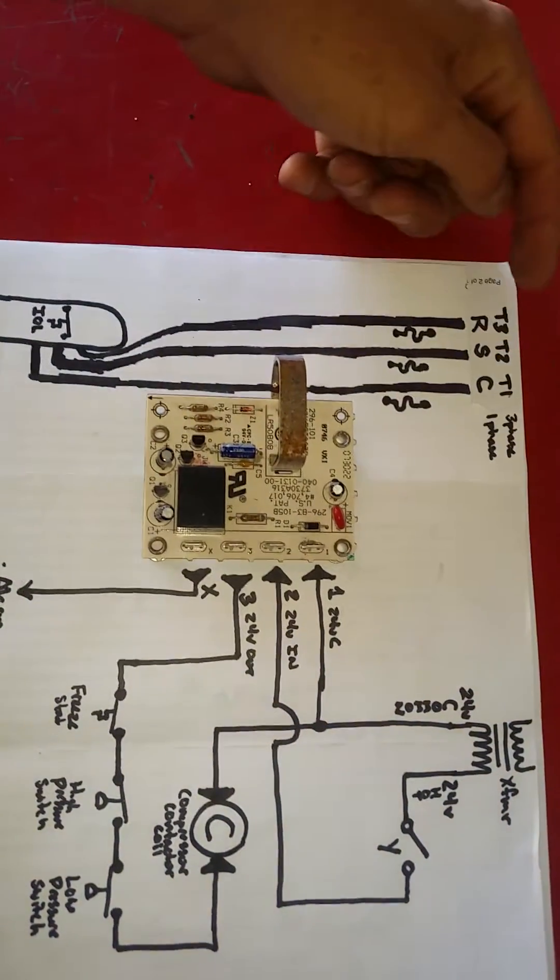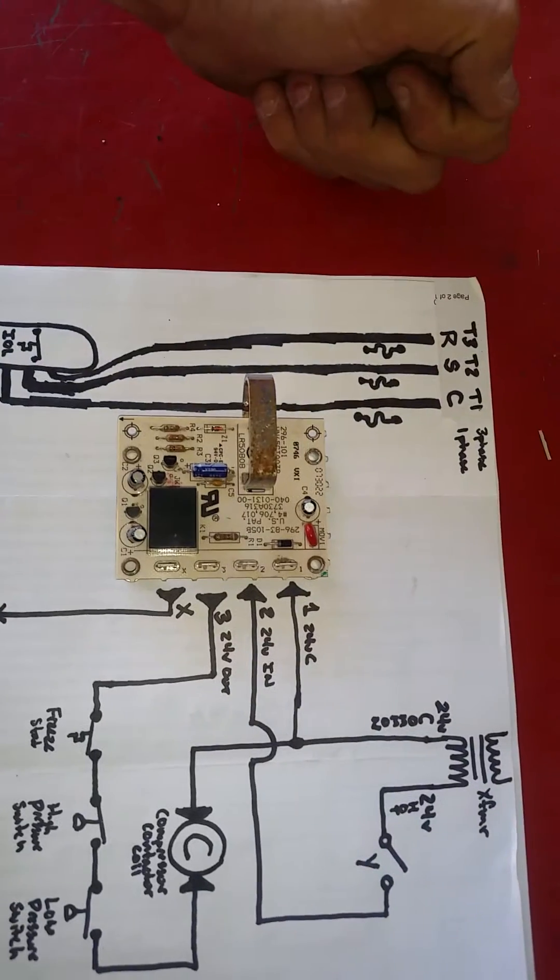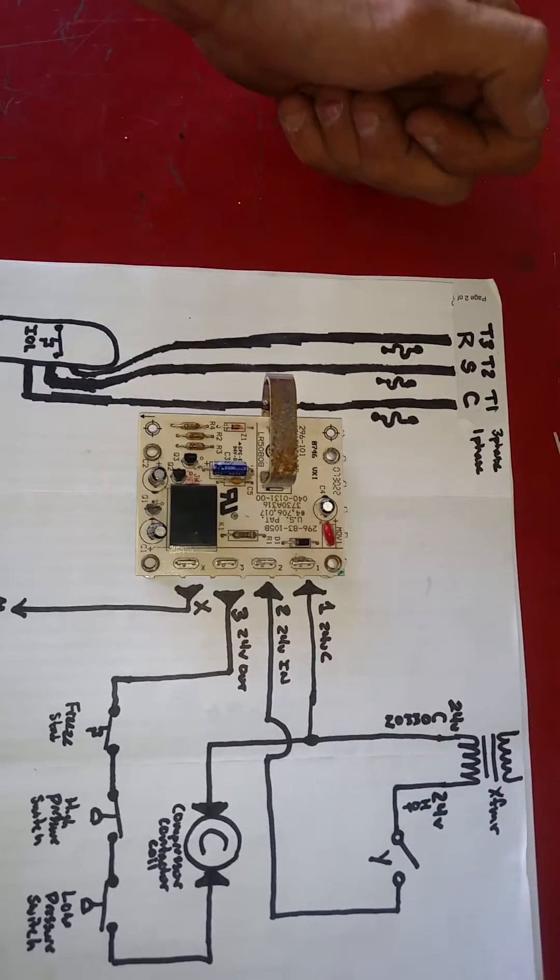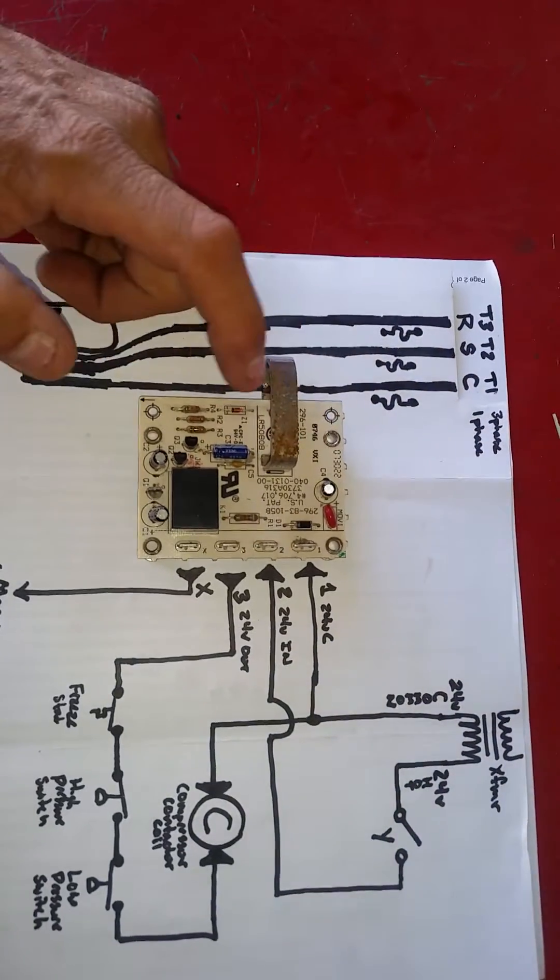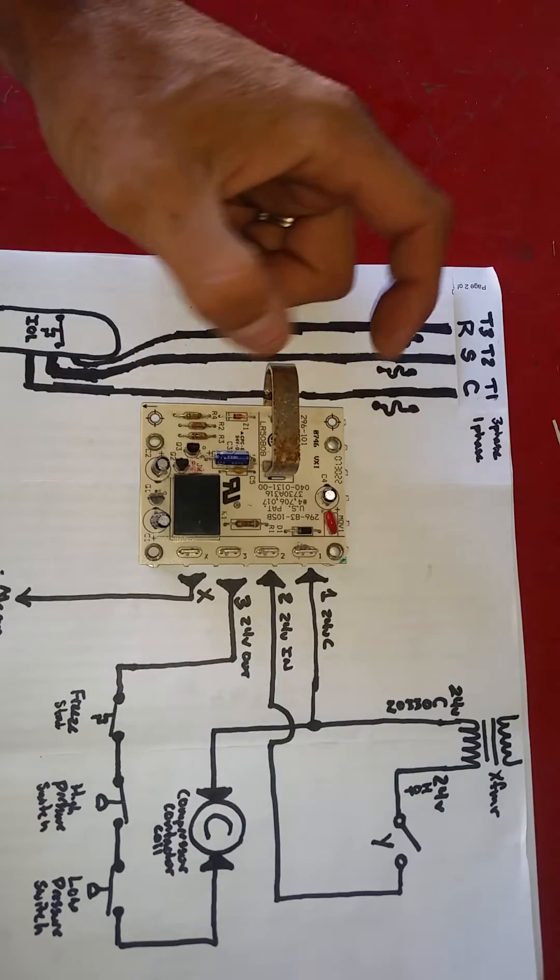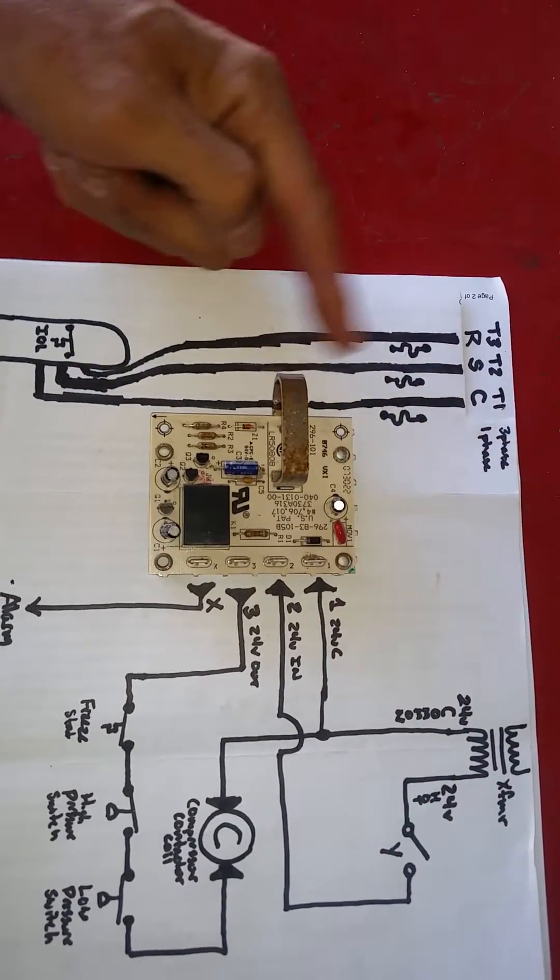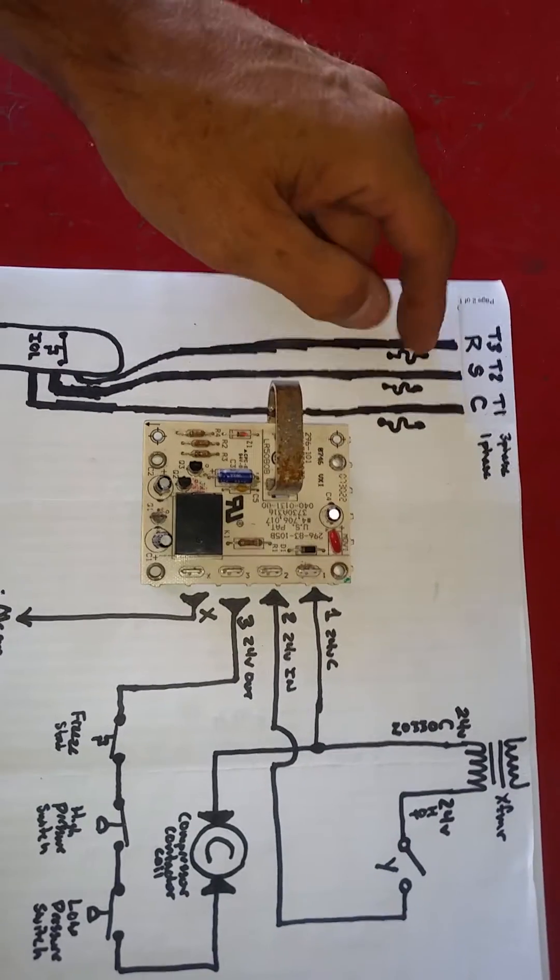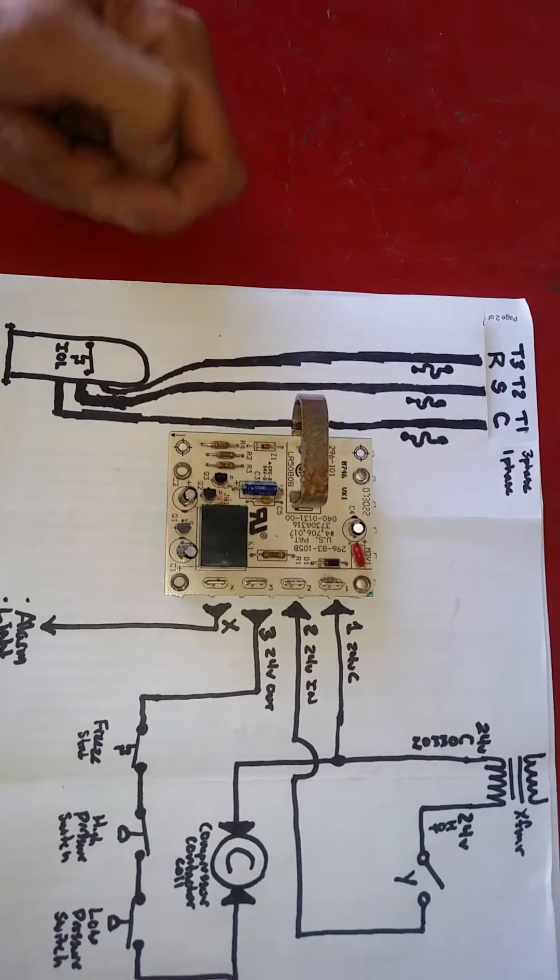Now if you notice, we have, either if it's a three phase, T1, T2, T3, or it's a single phase compressor, we'd have our common start and run. And usually our current sensor is wrapped around, or it will be around, our black or our common wire on our single phase, or any one of the three, if it's a three phase, leads going to the compressor.